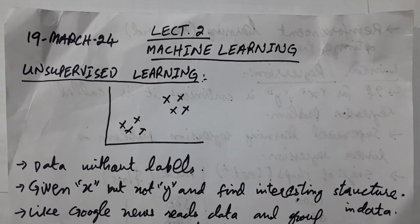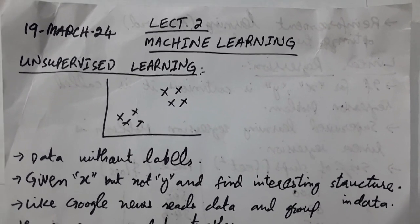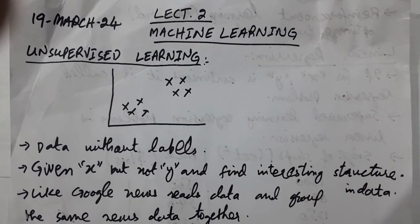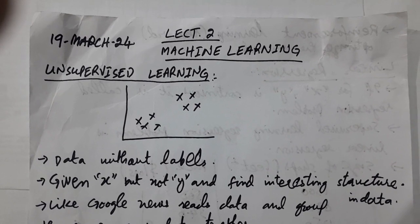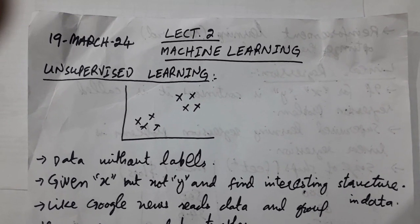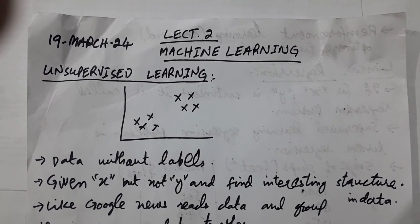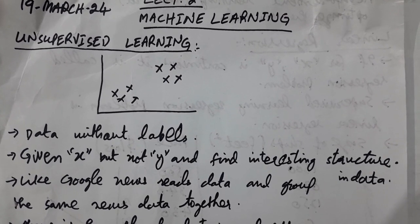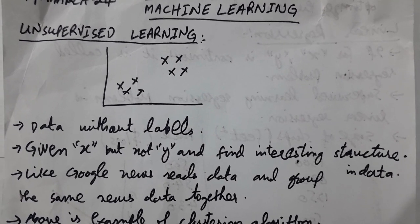In the previous video we studied supervised learning. Now I'll briefly explain unsupervised learning. There is a graph drawn with some points on the x-axis and y-axis. The basic difference for unsupervised learning is that data is available but without labels — data labeling is not provided. X is given but y is not given; we have to predict y as well.